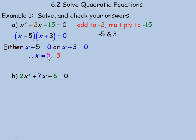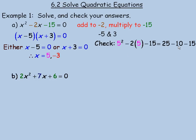Now we verify that those two answers are correct by substituting back into the original equation. Checking x equals 5: we get 5 squared minus 2 times 5 minus 15, which is 25 minus 10 minus 15, which equals 0. So x equals 5 is a correct solution.